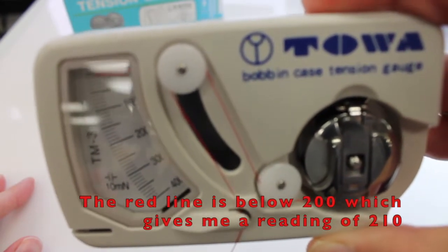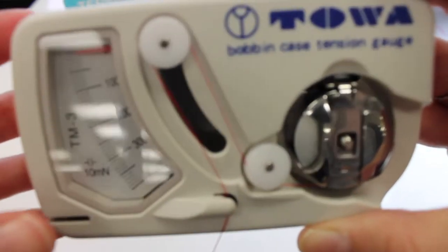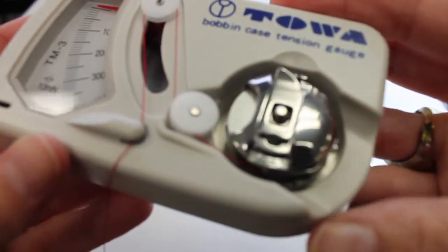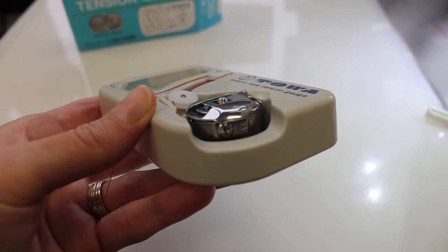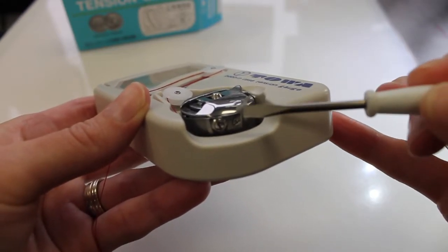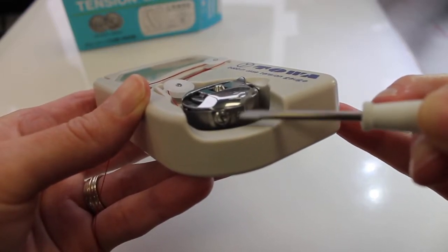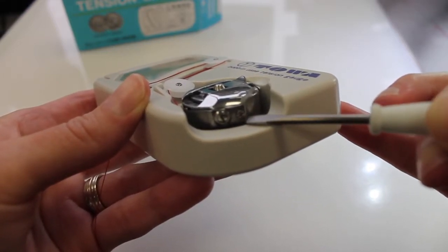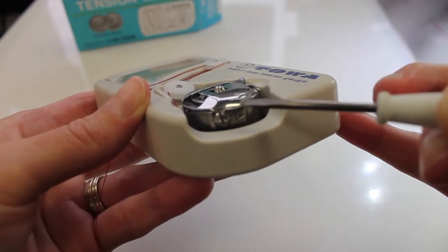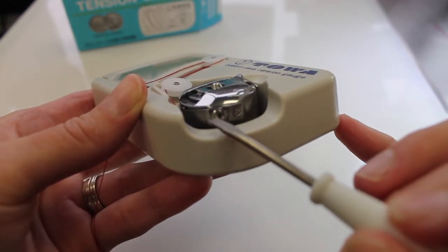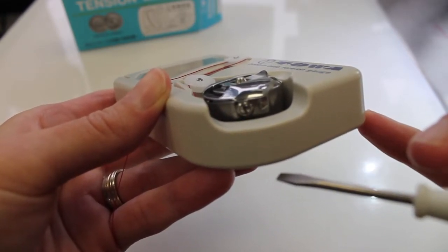So right now I'm just a little below 200, so if I need to adjust my tensions, I'm going to turn the Towa gauge slightly to the side. So once I turn the Towa gauge to the side, I have two screws here. I have a larger screw on the left and I have this smaller screw on the right. I do not want to touch that small screw on the right—that's what's holding my whole bobbin case together. So any tension adjustments that I make in the bobbin case, I'm going to make it on that larger screw on the left.